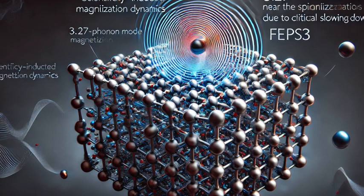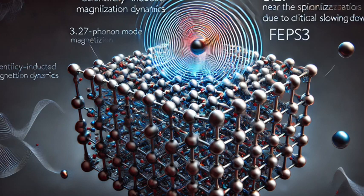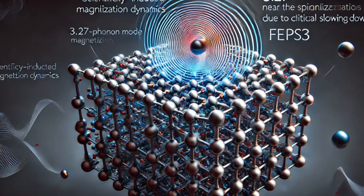If we can manipulate magnetism using light, we could revolutionize these technologies, make them faster, smaller, and much more powerful. Imagine being able to write data to a hard drive using ultra-fast pulses of light, or developing magnetic sensors with incredible sensitivity and speed. The possibilities are truly mind-boggling. And that's just the beginning.